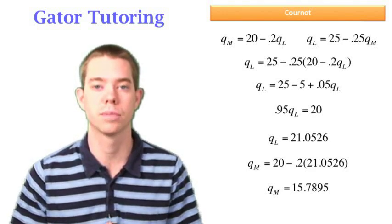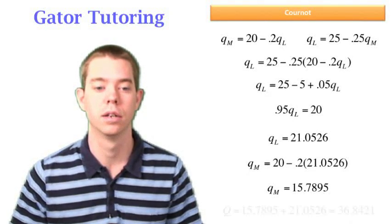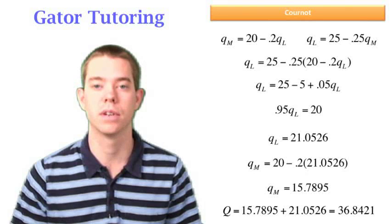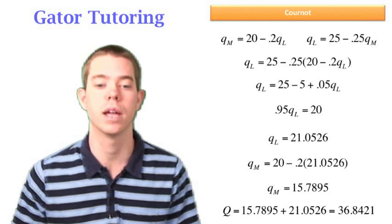So this question asked us about total industry output, which is just the two players in the industry, Larry and Matt, their quantities combined. So in this case, that's 15.7895 plus 21.0526. And that gives us our total industry output is 36.8421.